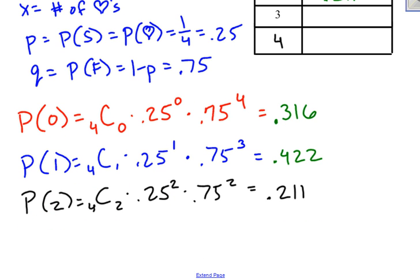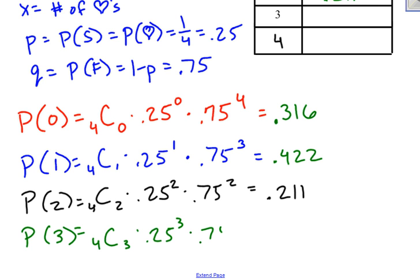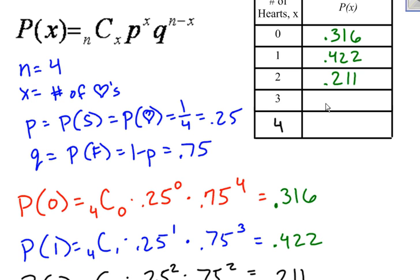The probability of getting three hearts: 4 choose 3, times 0.25 raised to the third power, times 0.75 raised to the first power. The math gives 0.047. So the probability of getting three hearts is 0.047.